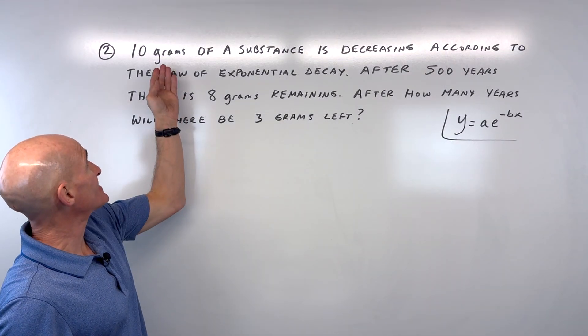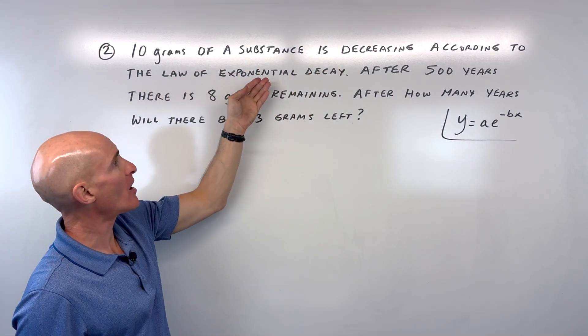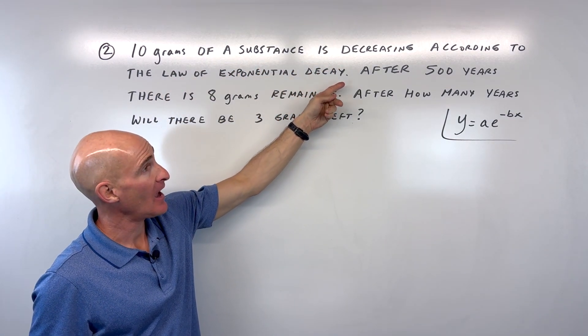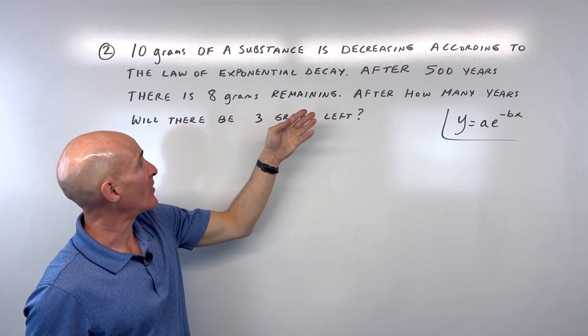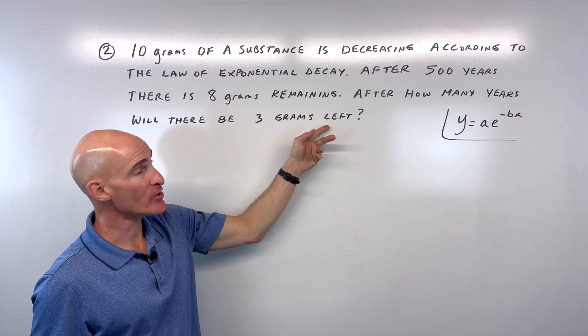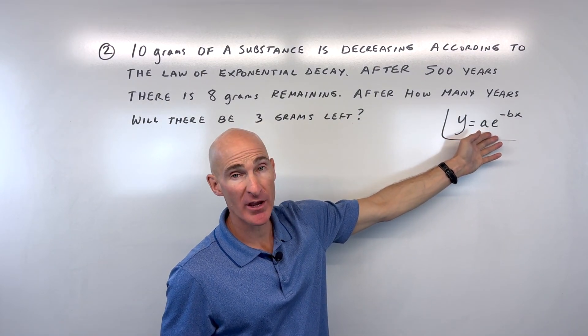For example number 2, it says 10 grams of a substance is decreasing according to the law of exponential decay. After 500 years there is 8 grams remaining. After how many years will there be 3 grams left?